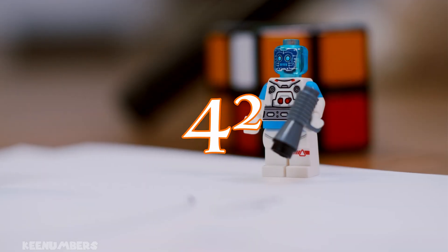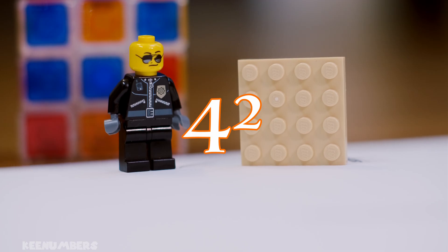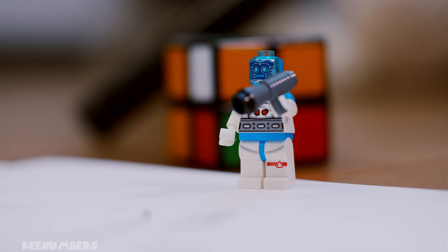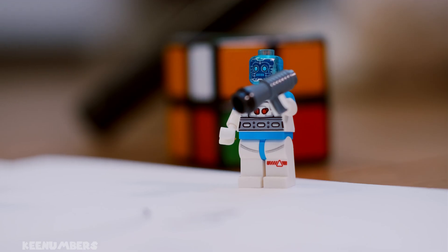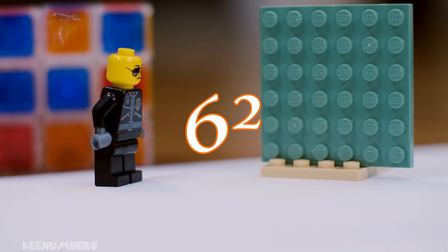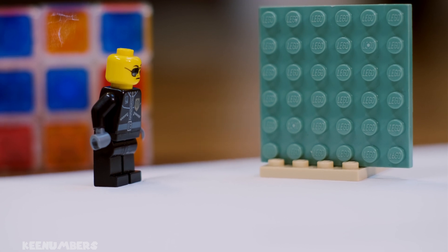We need four squared. That floor is too small. Okay, let's do six squared. Six by six, 36. Yeah, that's better. Let's start with that floor.